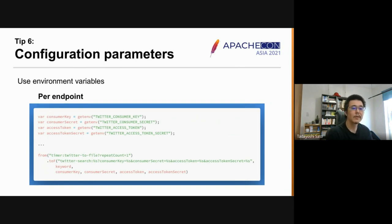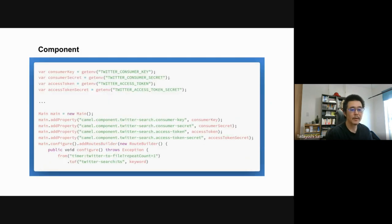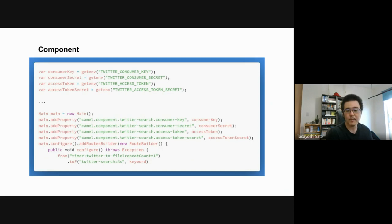There are two ways to apply those parameters to Camel components. One way is to apply them directly to each endpoint. The other way is to apply them to a component, so you can share the same configuration across all endpoints within the same component.